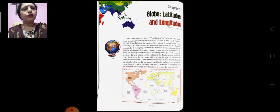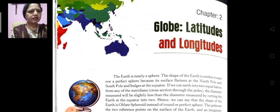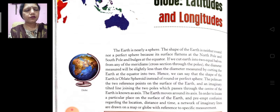So open your book, chapter number two. Here you can see the name of this chapter, globe. In this chapter we will know about the latitudes and longitudes. So now here you can see the picture of globe. This is the model of earth.